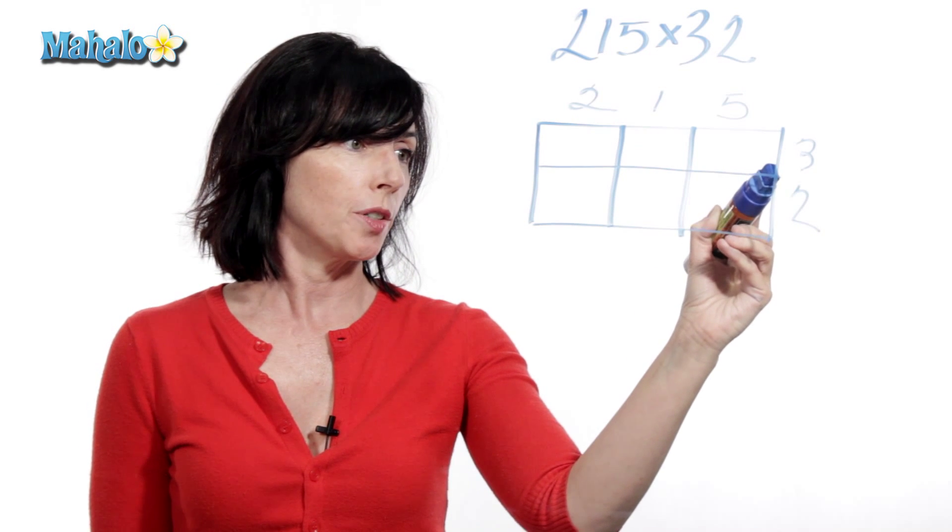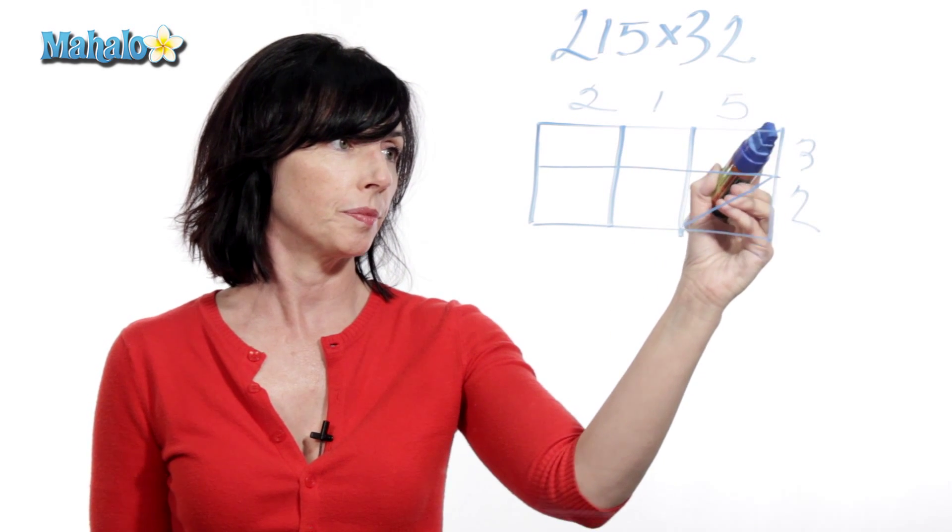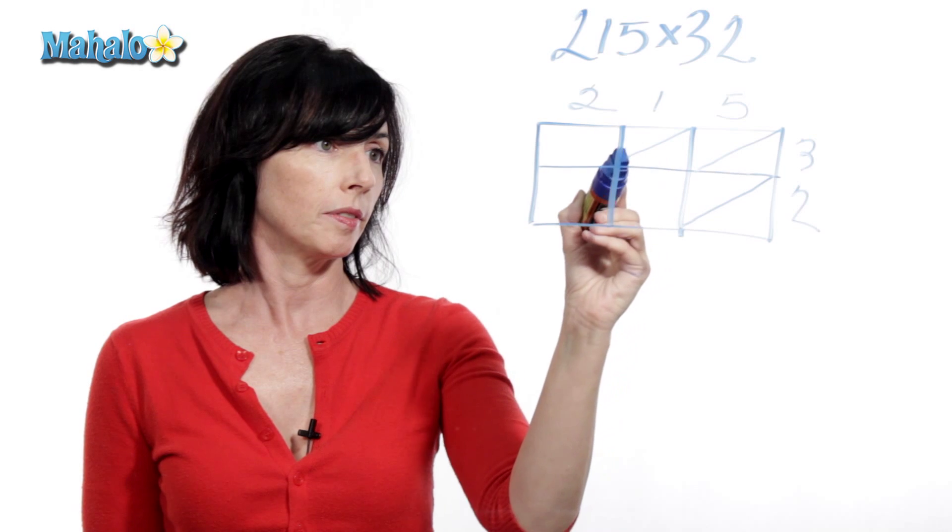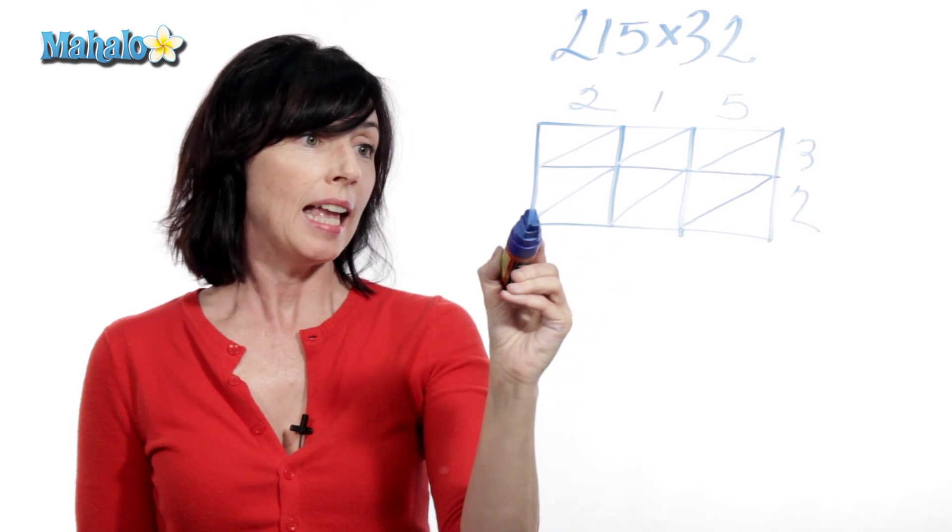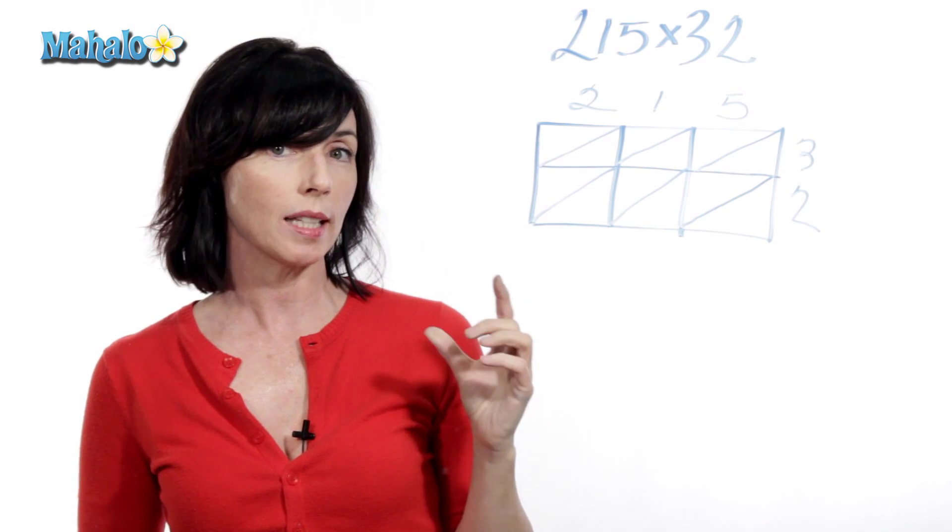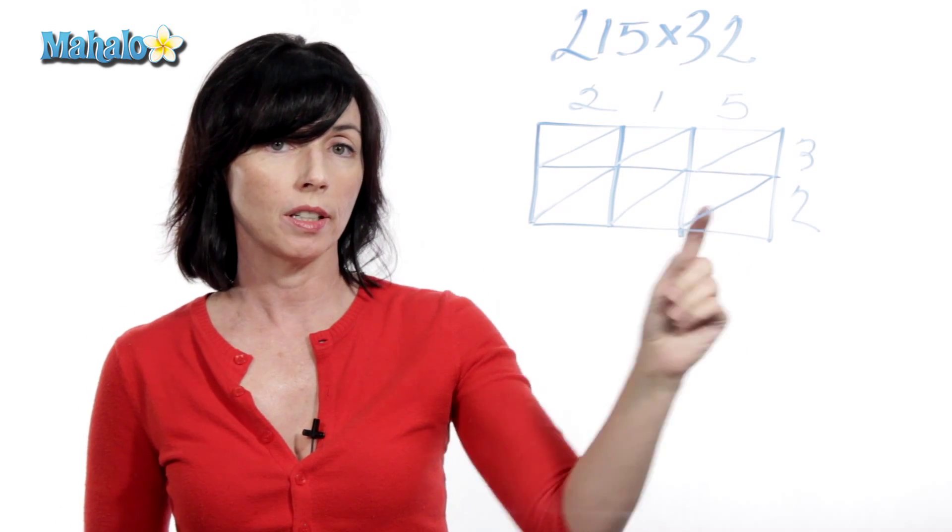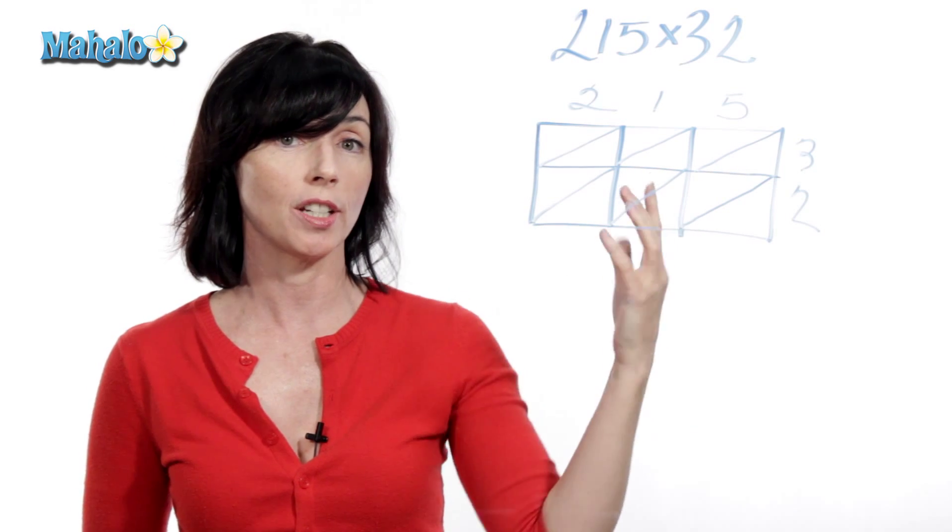Now, in each of these little boxes, I'm going to draw a diagonal. Okay. Now, the way this works is that in each one of these little boxes, this position is the ones and this position is the tens.